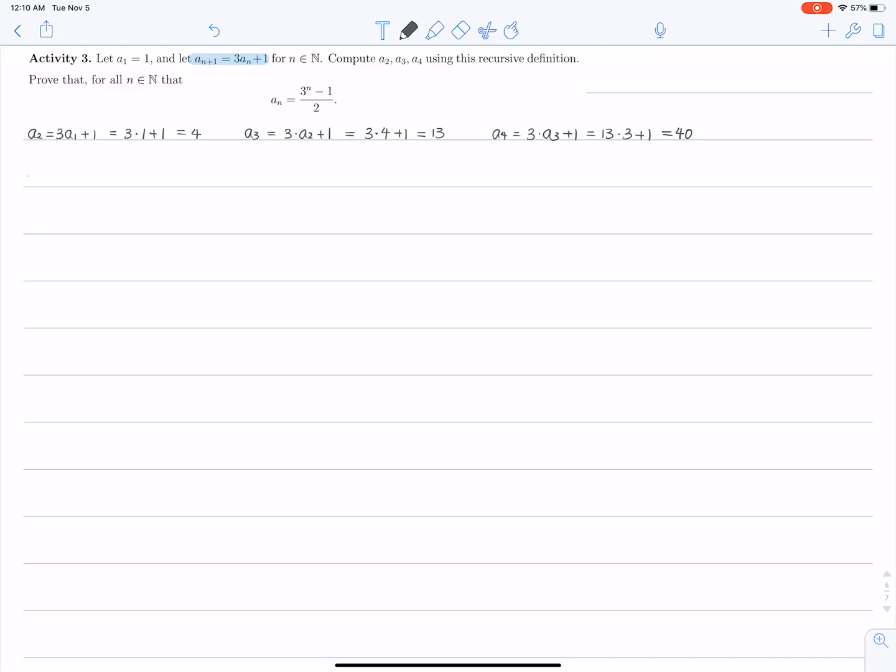Okay, now we need to prove this by using induction. So first of all, let's define our p of n. Let p of n be the statement a_n equals to 3 to the power of n minus 1 over 2. Alright, now base case, for n equals to 1, we have 3 to the power of 1 minus 1 over 2, which would be 3 minus 1. That's 2 over 2, which is 1. And that is a1. Okay, so those two numbers match. So we have our base case done.